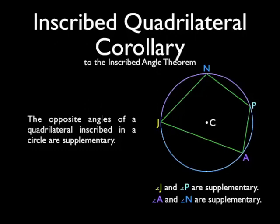Well, arc JNP plus arc JAP is the full circle, 360 degrees. So half of that is 180. So the measure of angle N plus the measure of angle A has to be 180. Hence, they are supplementary by definition.